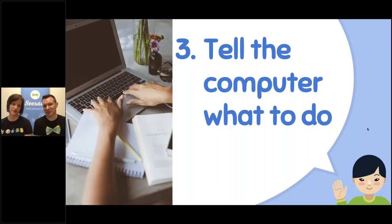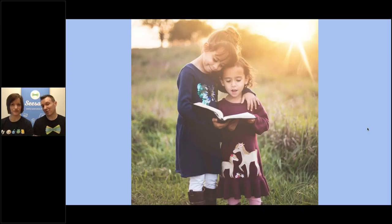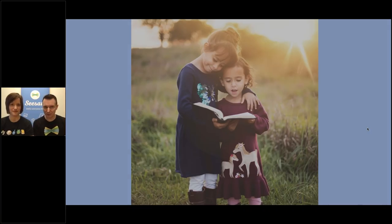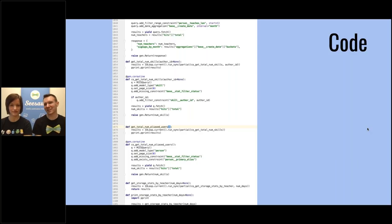Once you've figured out what you want to do, the next step is to tell the computer what to do. You probably know a little bit about reading — you can read to a friend and they'll have information they didn't have before. Computers don't read English, but they do read something called code. This is what code looks like — it's the same kind of thing, but instead of writing a book, you're writing it in computer code and the computer reads it and does things for you. This is some of the code that's actually in Seesaw, just to give you an idea of what it looks like.